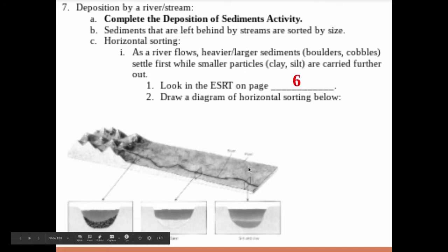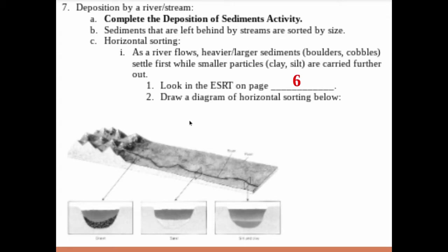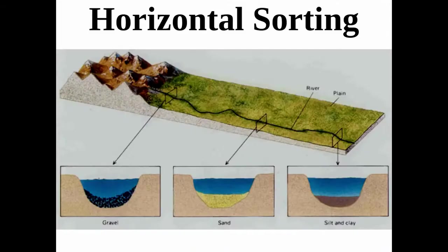Looking at the diagram in your notes, we have a mountainous region where a stream heads down to a flatter plain region. The velocity of the water is higher because of the steeper gradient in the mountainous region, then it slows down as we reach the flatter region.